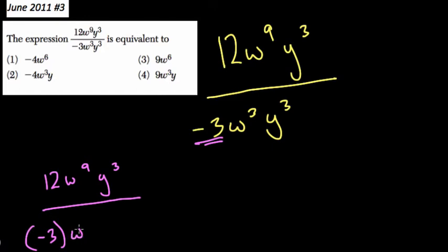This just makes sure I treat w to the 3rd as a positive value and y to the 3rd as a positive value. I don't need to treat them as negatives over and over again. Once I think about that, I have 12 over negative 3, that's just negative 4. Again, put it in parentheses.